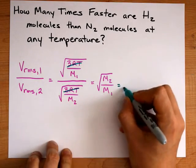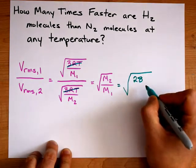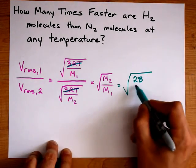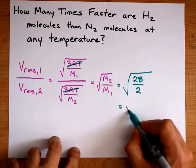Now what that means is you need the molar mass of nitrogen, which is about 28 grams per mole, and the molar mass of hydrogen, which is about 2 grams per mole. So that ends up being root 14.